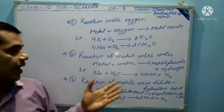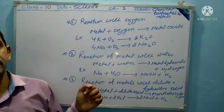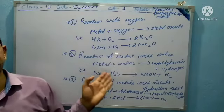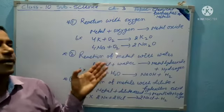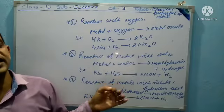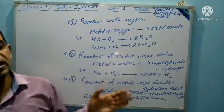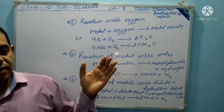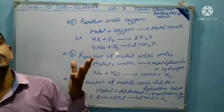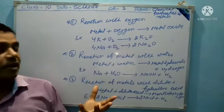Now another example: the reaction of calcium metal with water. Calcium plus water produces calcium hydroxide plus hydrogen.